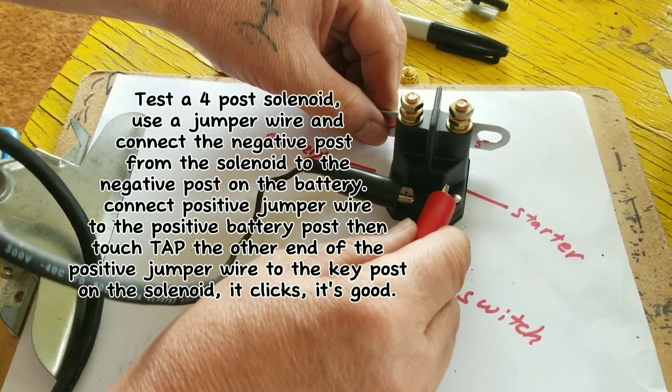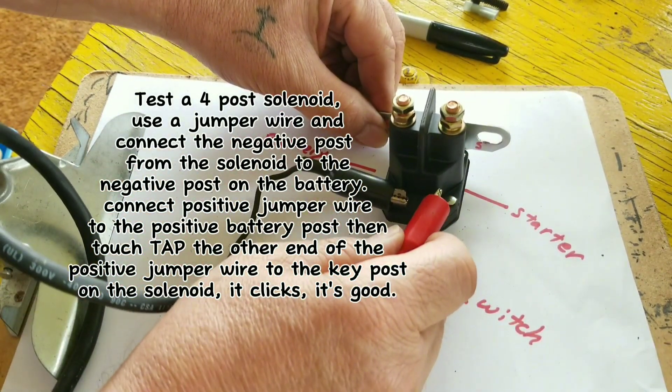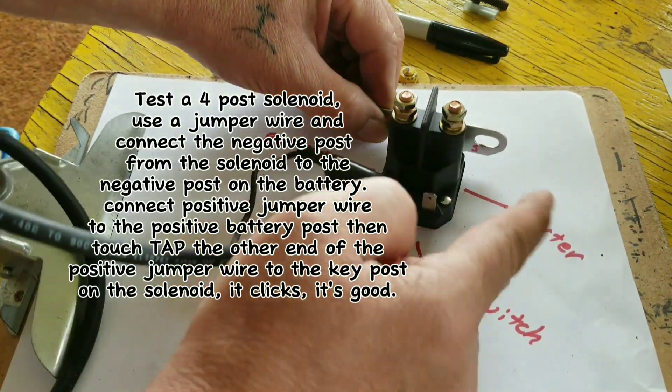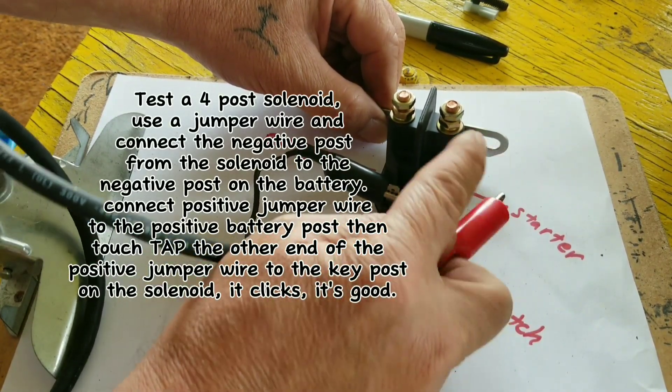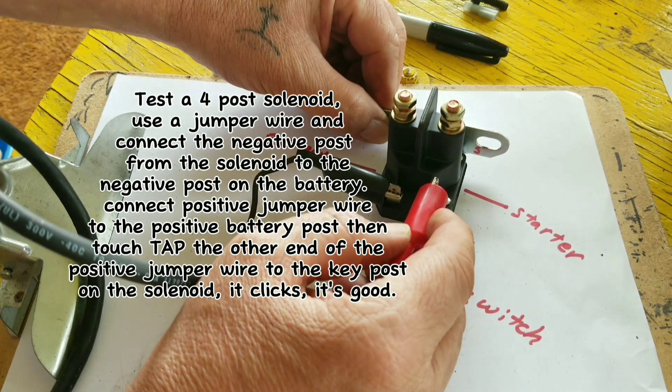That means it sends power to the starter. The battery is hooked right there. When you hit the switch it's sending power over here, which means the starter is hooked up there. When you turn the key switch you hear this, that's when your mower starts.